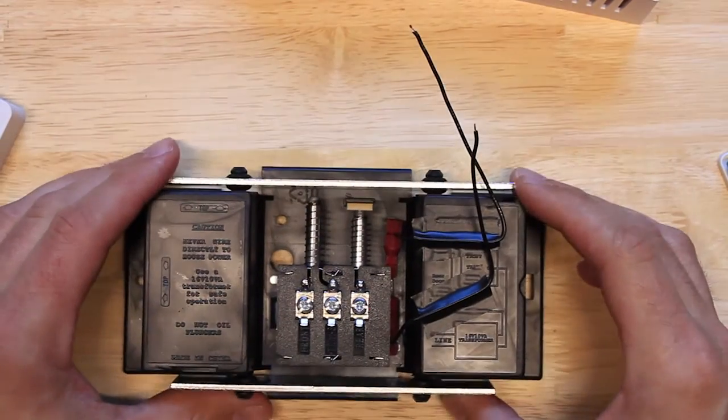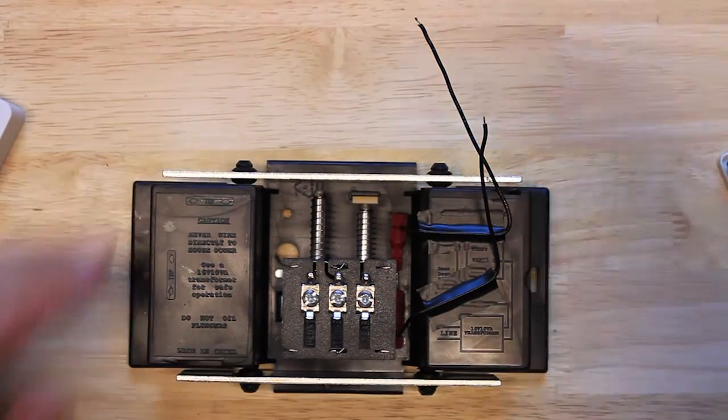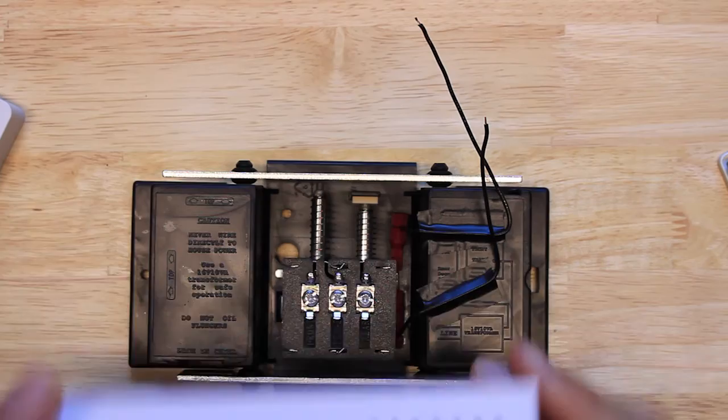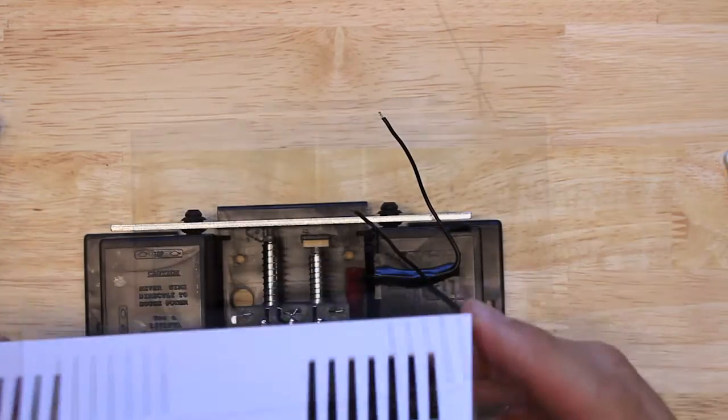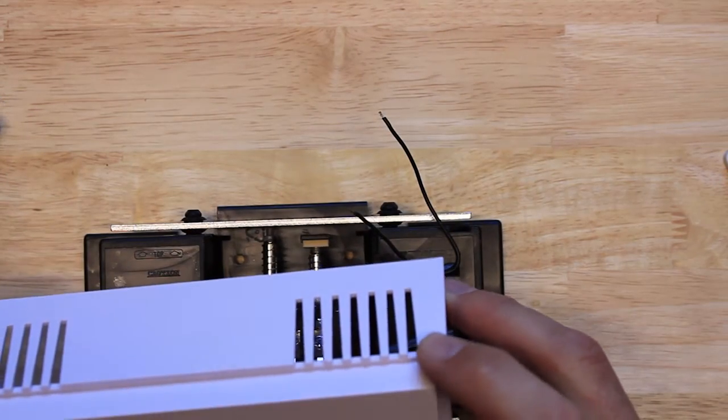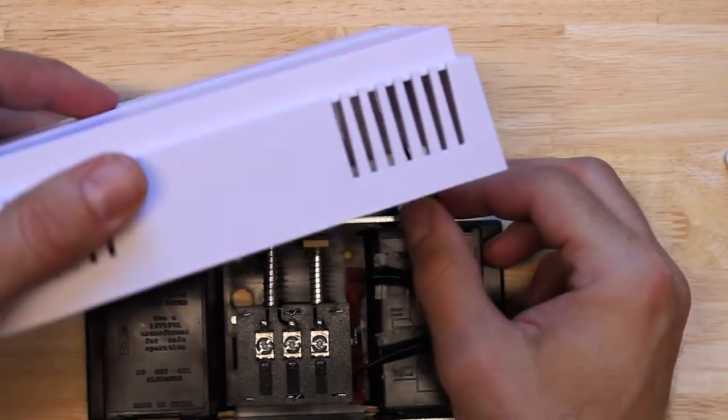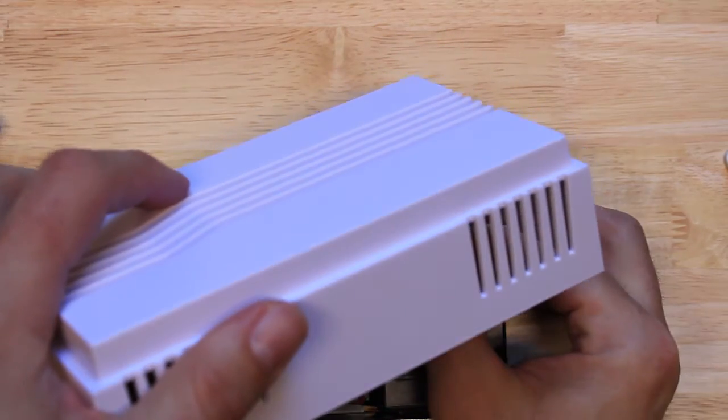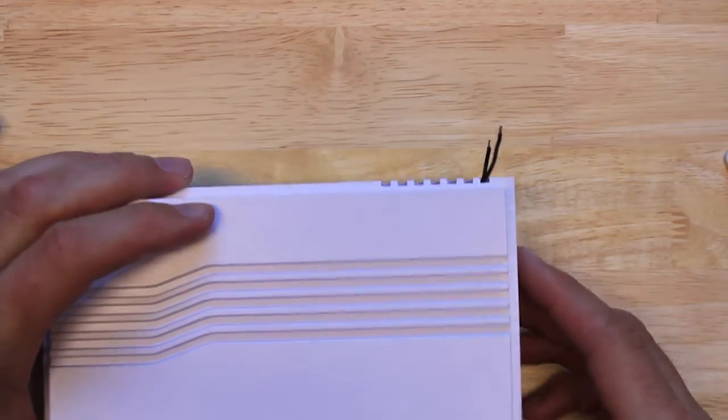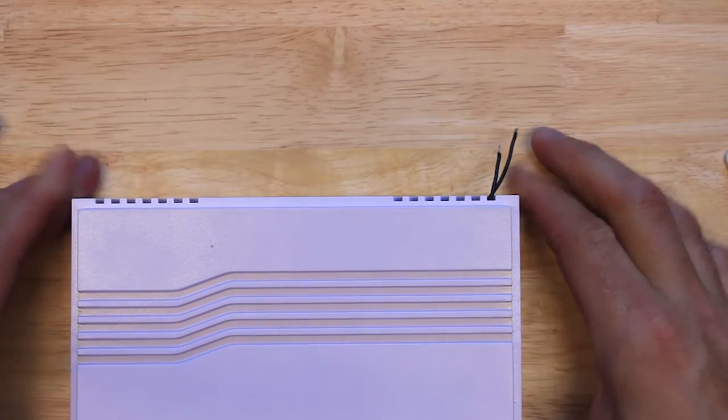And then from this point we just need to feed these wires through the slot on the doorbell cover. Now this could be tricky but, you know, it just takes a moment to actually get the wires through. And then at that point we'll wire it up to the Insteon open-close sensor.